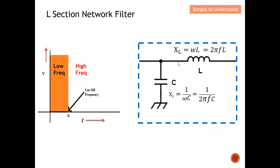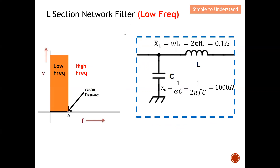Let's understand the impedance of L and C. For an inductor, the impedance is governed by ωL, and since ω = 2πf, the impedance of L is 2πfL. For a capacitor, the impedance is 1/ωC, so the impedance of C is 1/(2πfC). Note that I have removed the j term for this discussion — in the real world there is a j term, but removing it keeps the discussion meaningful in relative terms.